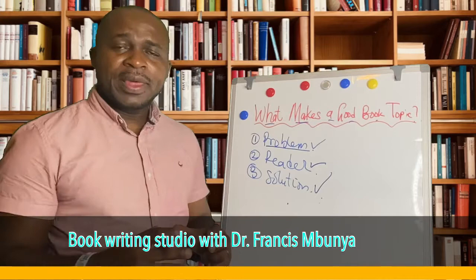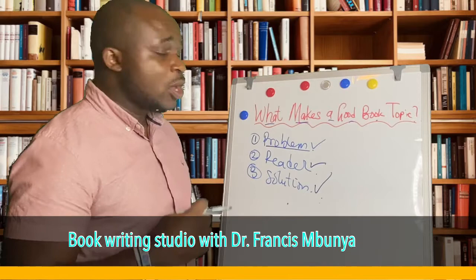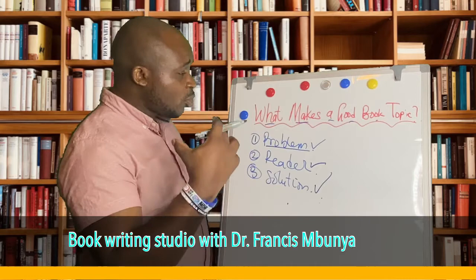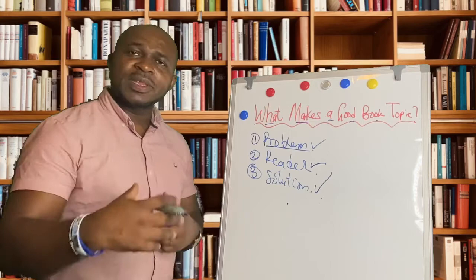When you understand how all of this plays into this, when you understand the structure of a book, when you understand what you should think about first and what should come second, then it's very possible for you to get your book done in less than 40 hours. It's very possible for you to become a published author in less than nine weeks, which is exactly what we help our best-selling authors do. We help them to structure their ideas in a way that gets them in front of the people that need their book.